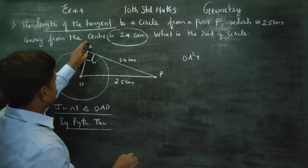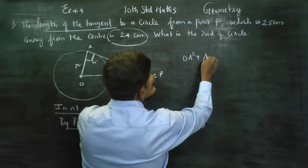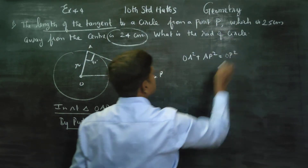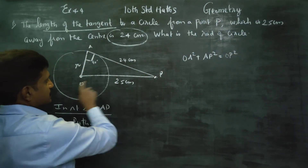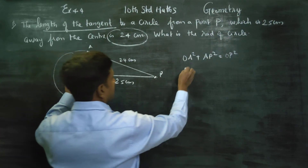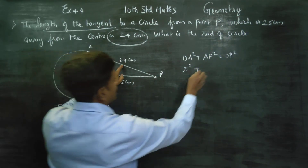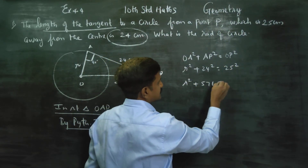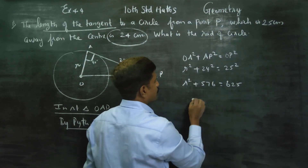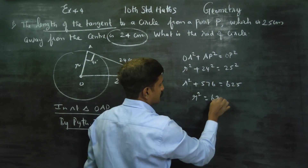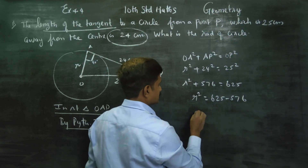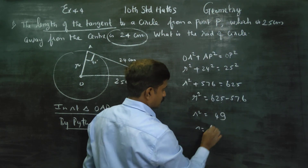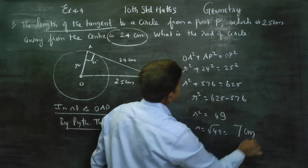OA² plus AP² equals OP². So r² plus 24² equals 25². That gives r² plus 576 equals 625. Therefore r² equals 625 minus 576, which equals 49. R is equal to the square root of 49.